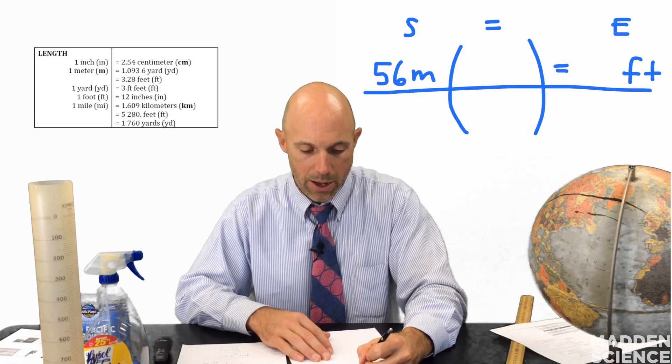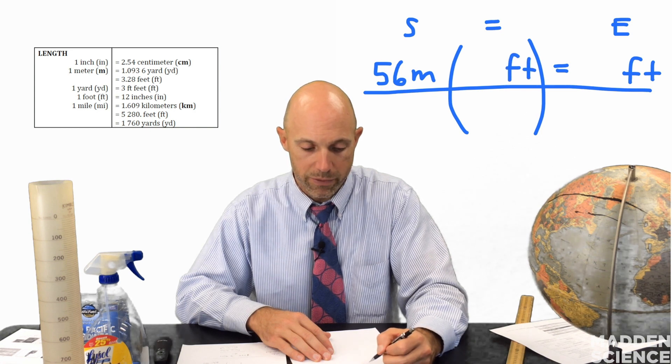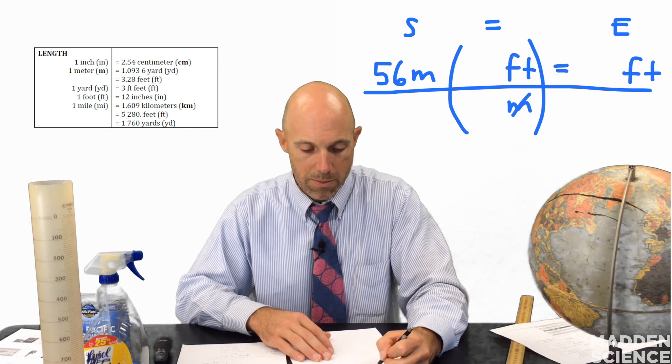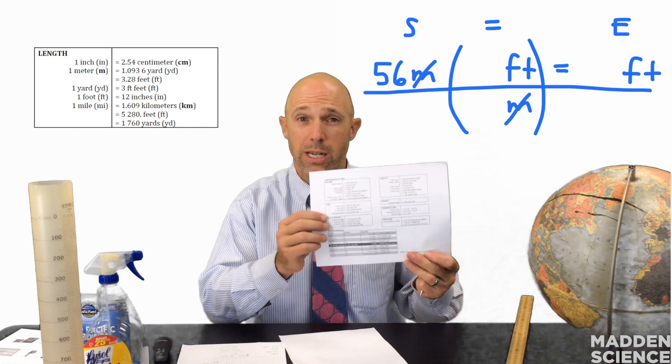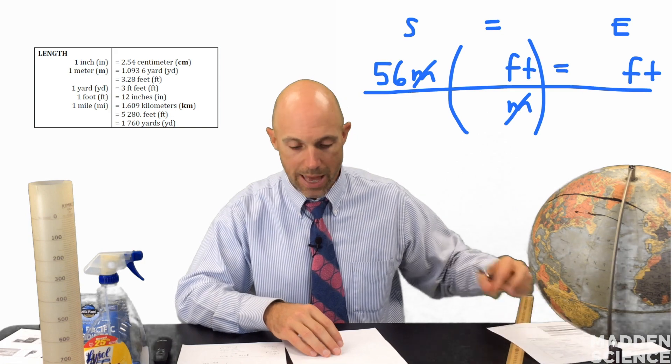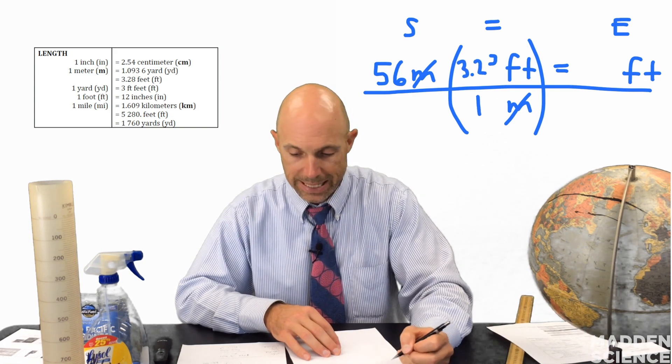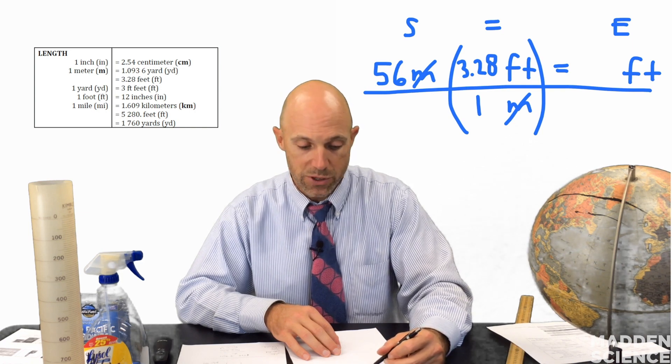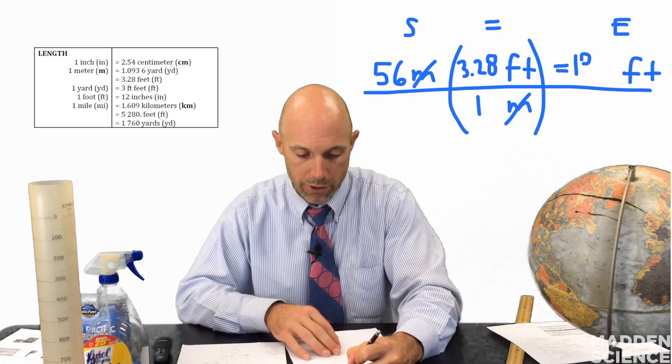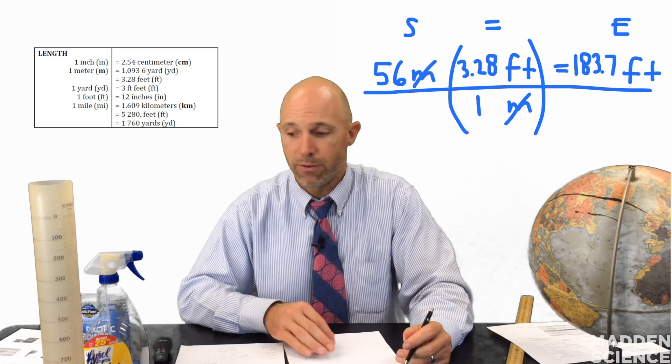We then want to take our units that we want to end up with, feet, and place it on the top of our equivalency statement. And meters goes on the bottom. Meters will then cancel. We can then look back and refer to our sheet right here and we see that one meter is equal to 3.28 feet. We can then multiply 56 times 3.28 and we get 183.68 or 183.7 feet.